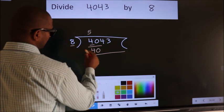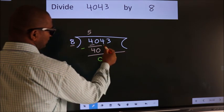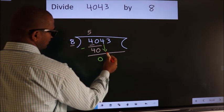Now, we should subtract. We get 0. After this, bring down the beside number. So, 4 down.